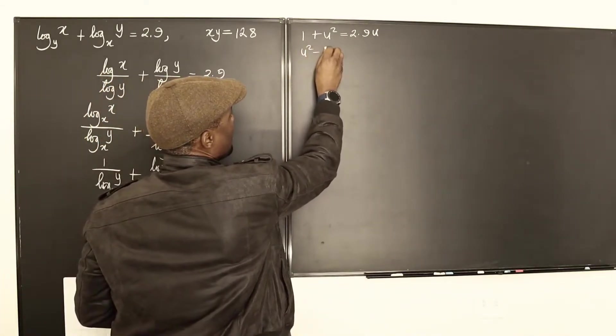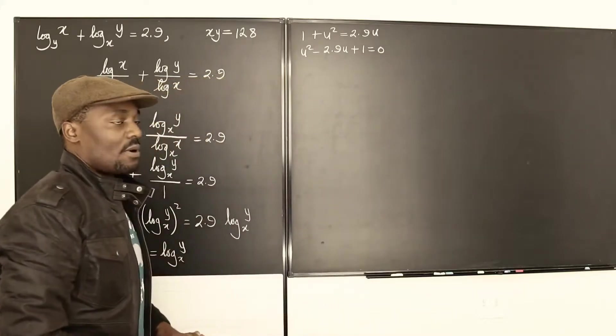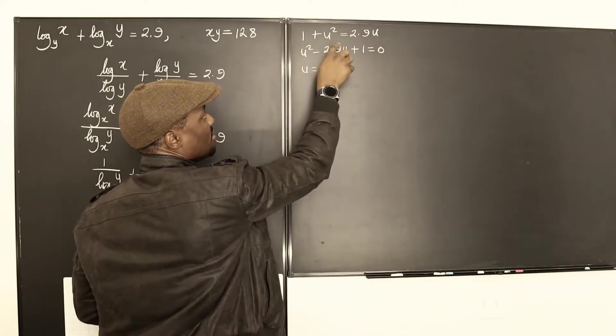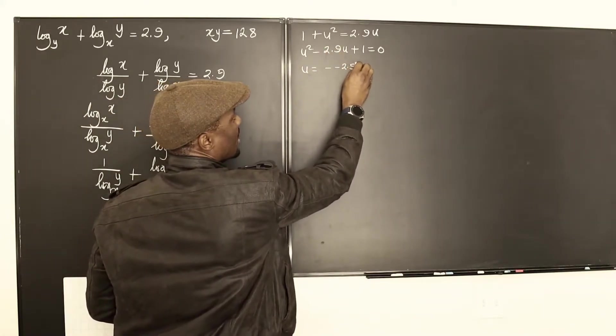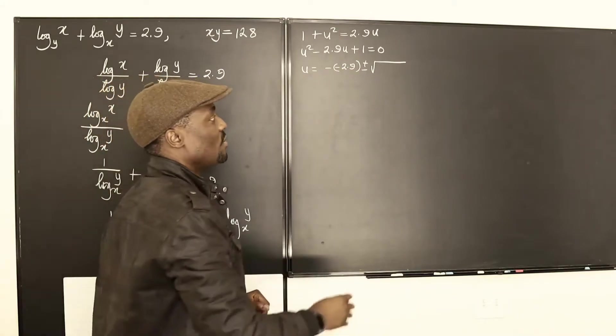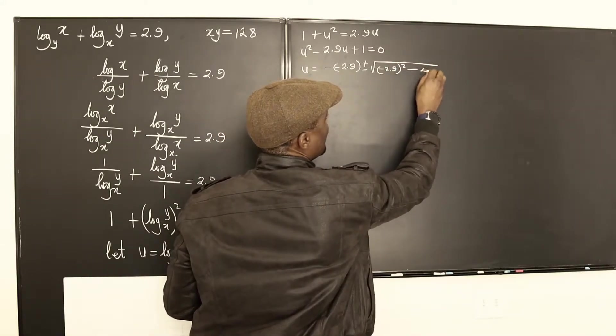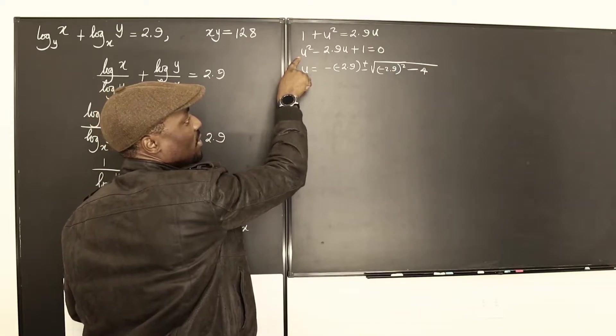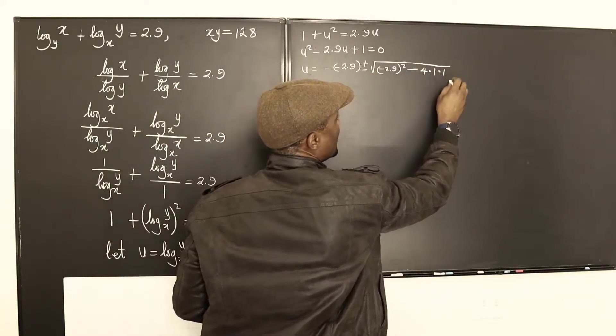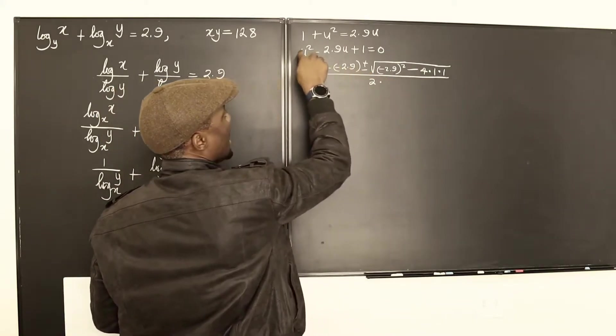So this is going to be u squared minus 2.9u plus 1 equals 0. Let's use the quadratic formula. We'll end up getting u equals minus b will be minus negative 2.9 plus or minus square root of b squared. b squared is going to be 2.9 squared. That's negative 2.9 squared minus 4 times a, or a right here is 1. 4 times 4ac. And what's c? c is also 1. All over 2a. That's 2 times our a is 1.